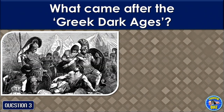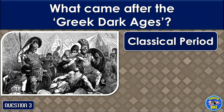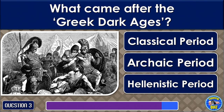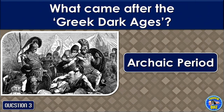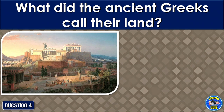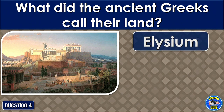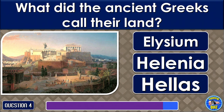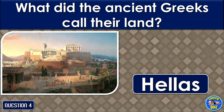What came after the Greek Dark Ages? The Archaic Period. What did the ancient Greeks call their land? Hellas.